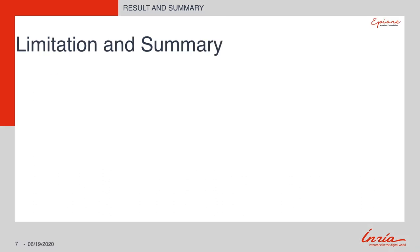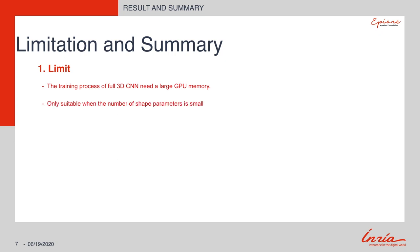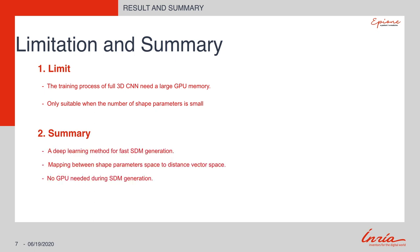However, the proposed method still has limitations in that the training process of the full 3D neural network requires a very large GPU memory, and the current method might be suitable only for small parameter space tasks due to the quadratic size increase of the training data. In summary, we proposed a deep learning-based fast signed distance map generation method that maps directly from the parameter space to the distance map space. The method only needs GPU during the training time. Thank you.